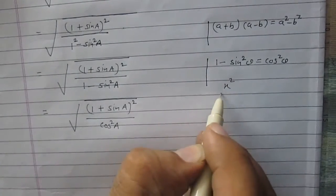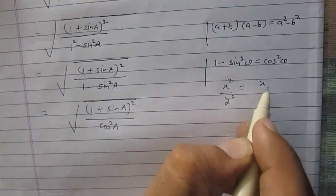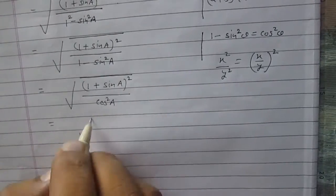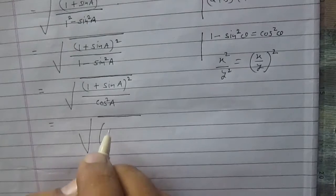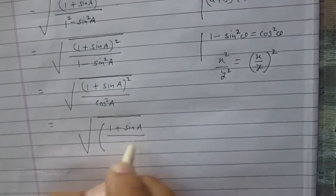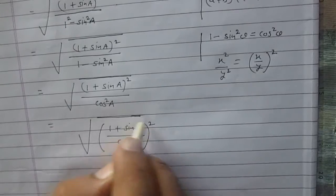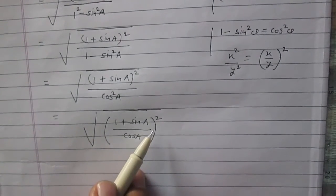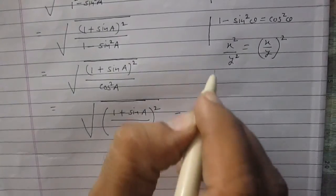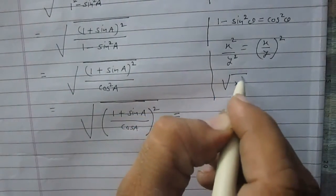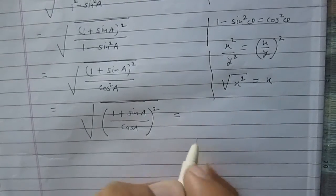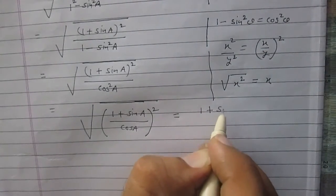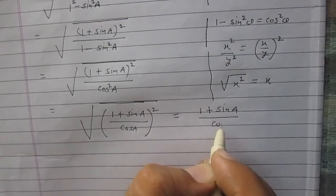As we know that x squared divided by y squared can be written as (x upon y) whole square, we can write this as the square root of the square of (1 plus sin a) upon cos a. This square root and the square cancel each other's effect, since the square root of x squared is x. So the result is simply (1 plus sin a) upon cos a.